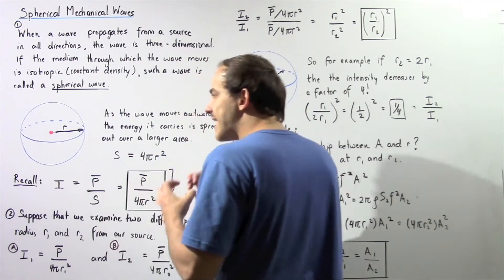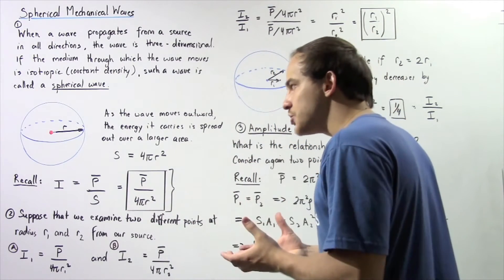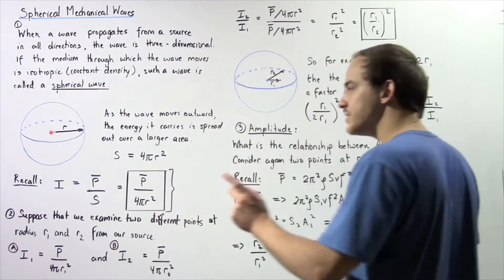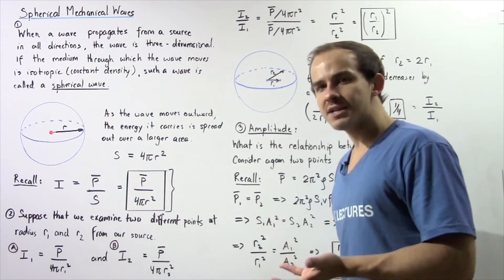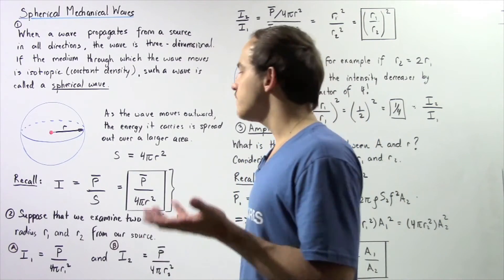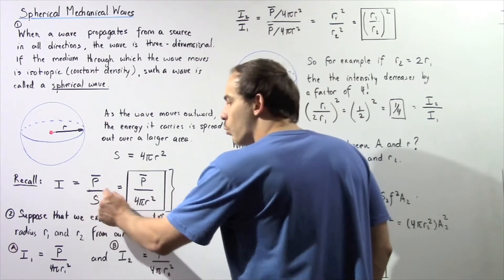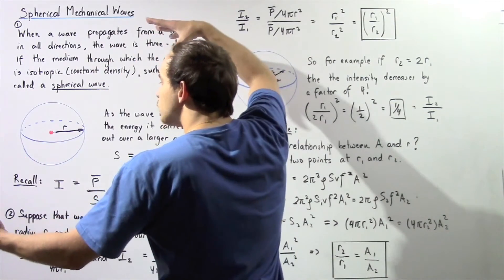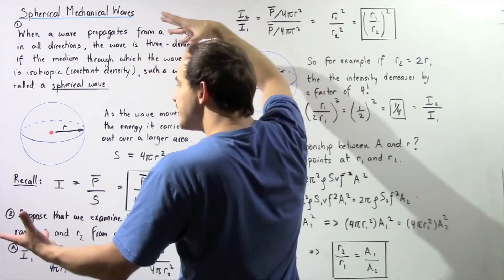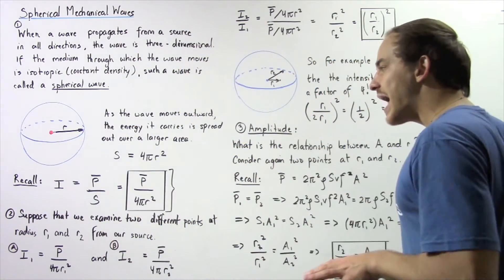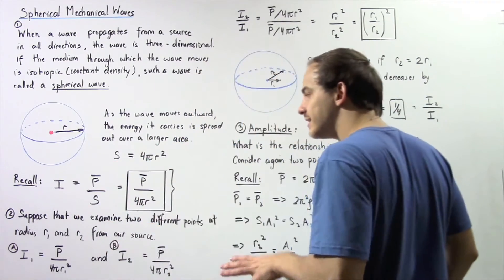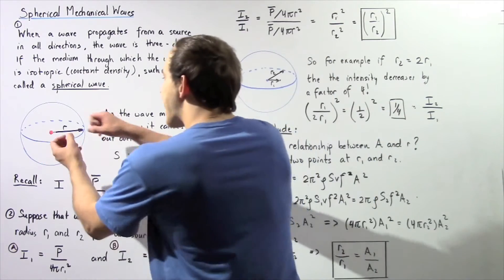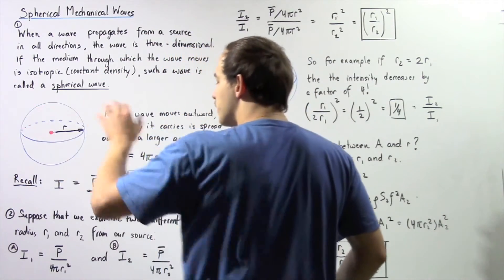When I snap my fingers, a sound wave is created and the energy it carries remains constant. Since the energy remains constant, the average power is also constant, because average power is simply the rate of change of energy. At the same time, the denominator increases as the wave propagates outward — the surface area of the sphere increases as the radius increases. Therefore, because the average power remains constant and the denominator increases, the intensity of the sound wave decreases as the wave propagates outward from the source.